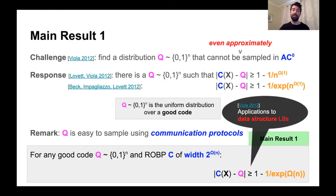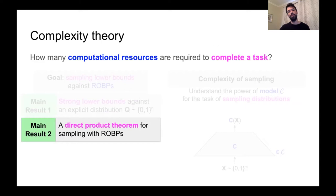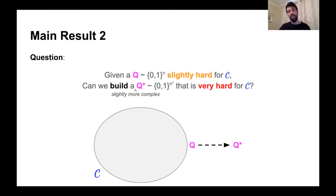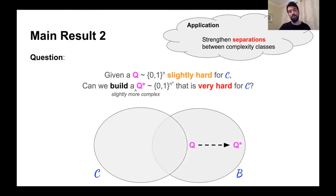Our second main result is a direct product theorem for sampling with ROBPs. A natural question is: if we have a distribution that's a little bit hard to sample for a computational class, can we somehow use it to build another distribution that is very hard to sample for that class? More specifically, can we build from Q a distribution Q* that is just slightly more complex but much harder to sample? If we can find such a Q*, we'll be able to strengthen known separations between complexity classes.